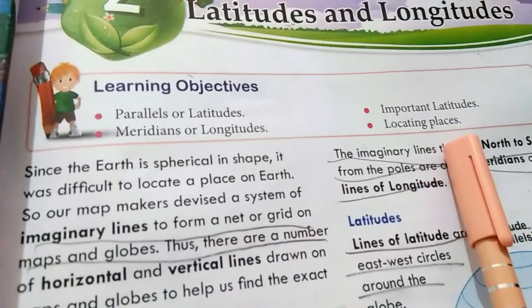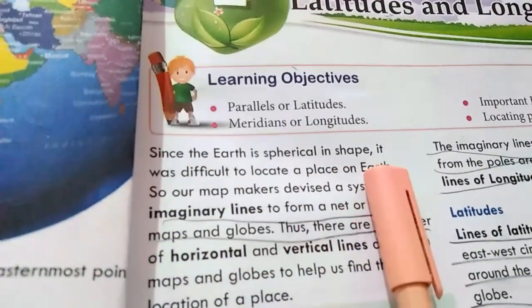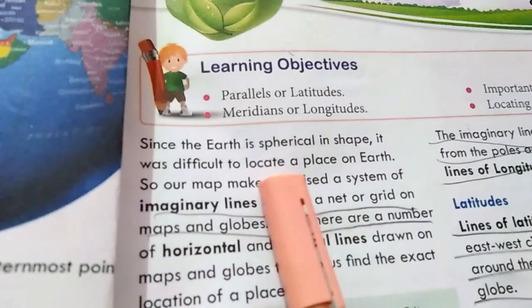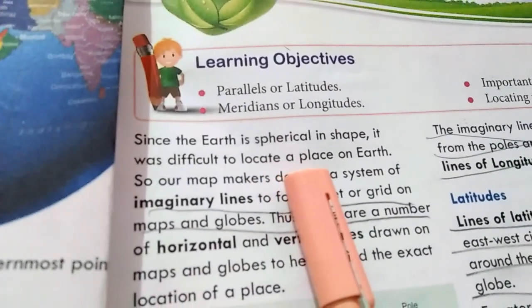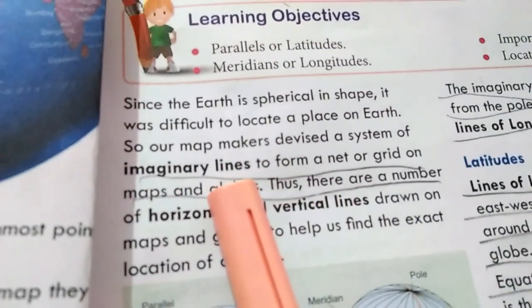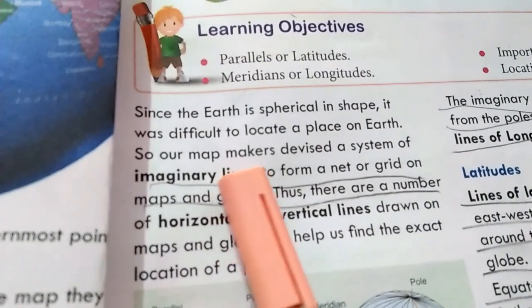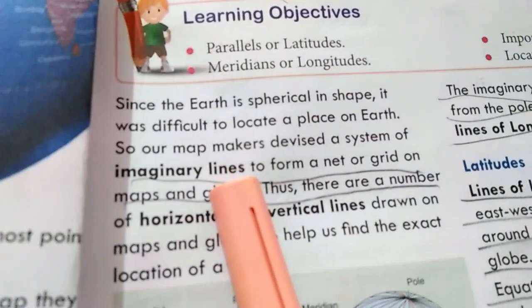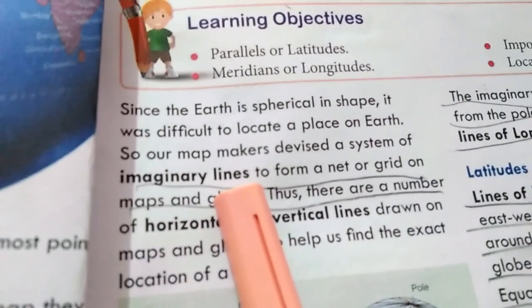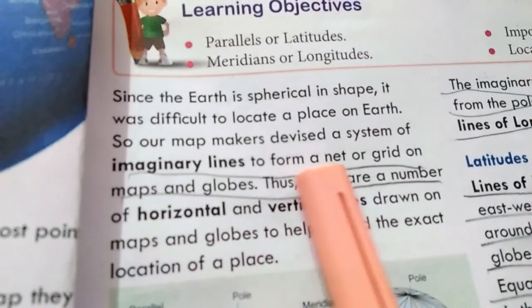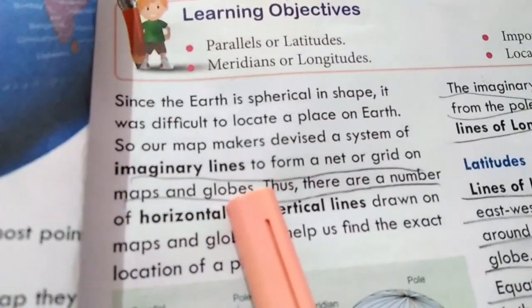Since the earth is spherical in shape, it was difficult to locate a place on earth. So our map makers devised a system of imaginary lines. This is why the map makers who have prepared a map created a system of imaginary lines — lines which do not really exist.